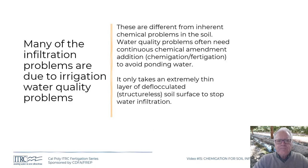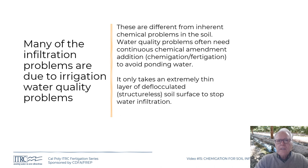Many infiltration problems are due to irrigation water quality problems — something in the irrigation water isn't quite right. This is different from inherent soil problems, such as alkaline soils with a high percent sodium or magnesium. When the problem is caused by the water, in most cases we can't remove everything from it, so you need continuous chemical amendment addition — in other words, you chemigate or fertigate to avoid the ponding problem.